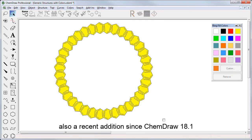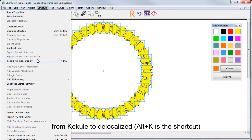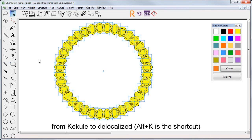Also a recent addition, since ChemDraw 18.1, you can toggle the aromatic representation from Calculate to Delocalize and Alt-K is the shortcut for that.